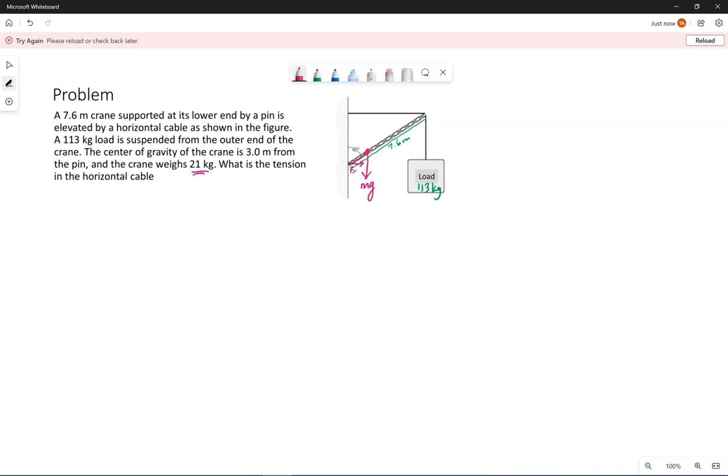So there's an X component from the pin, and I'm just going to draw the Y component up. There's the force of gravity because of the crane's weight itself. There is a tension in this horizontal cable. There is a pull downwards because of the load that the crane is holding up. Because we're in equilibrium, the load itself is feeling the force of gravity downwards and that tension upwards.